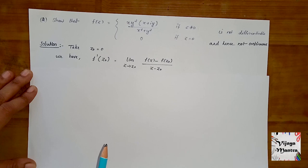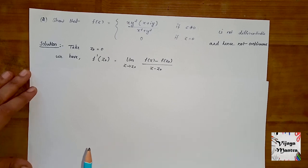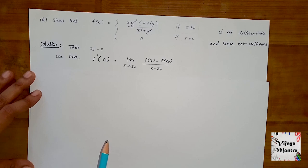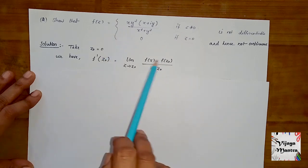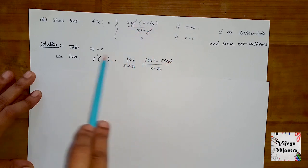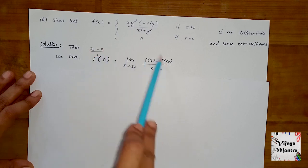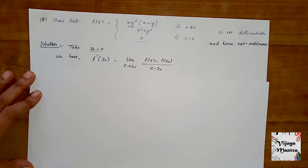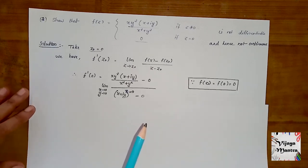Then f'(z₀) by definition is the limit as z → z₀ of [f(z) - f(z₀)] / (z - z₀). We can substitute here. When z₀ = 0, then f(z₀) = 0. The given value f(0) = 0. Substitute these values in the next step.